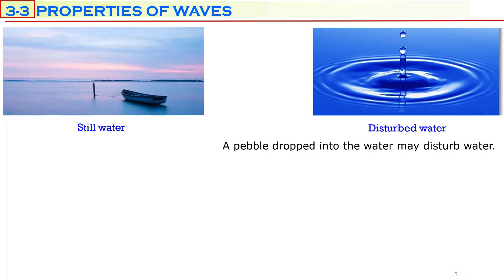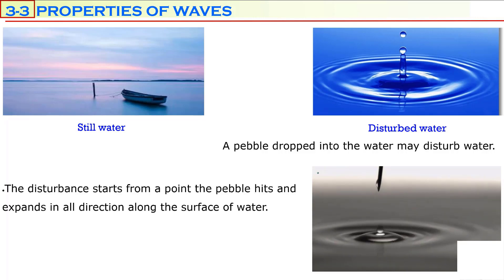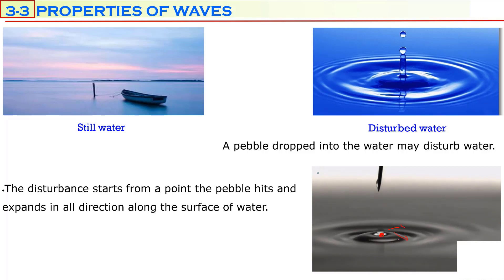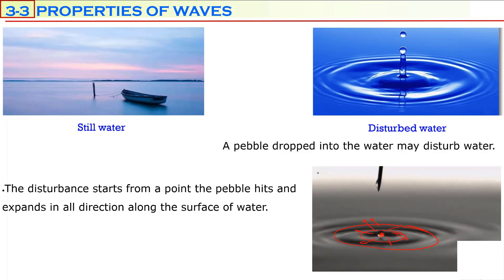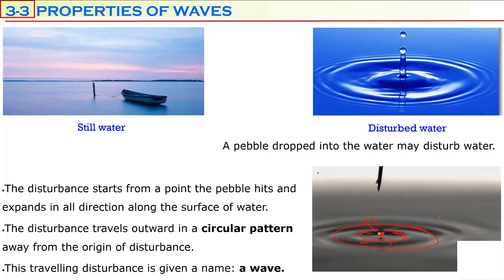If you drop a pebble onto the surface of the water, it can cause some disturbance on the surface. We will observe that the disturbance starts expanding from the point where the pebble hits, expanding in all directions along the surface of the water. This disturbance travels outward in a circular pattern, away from the original disturbance. This traveling disturbance on the surface of the water is known in physics as a wave.